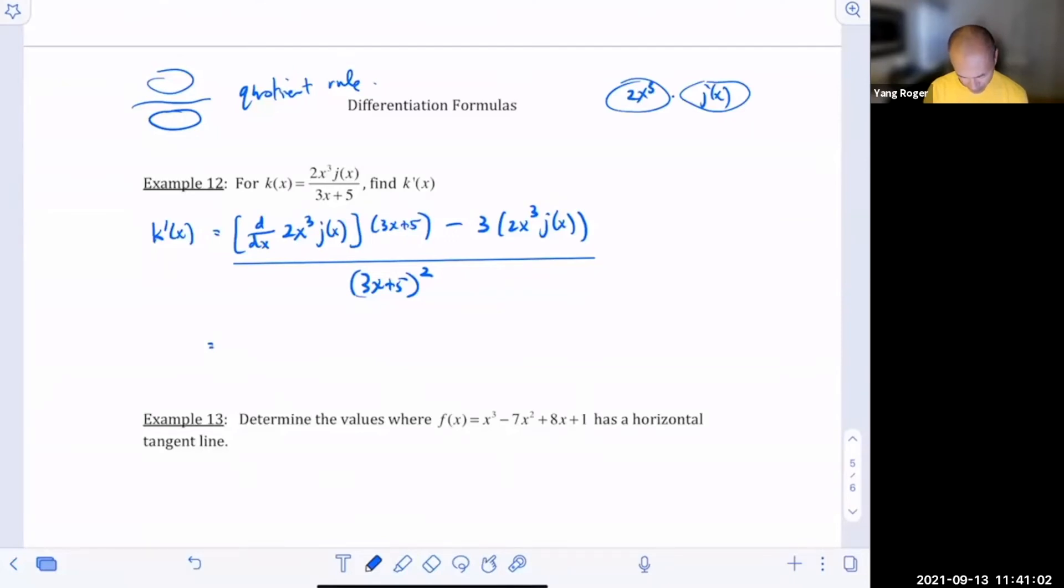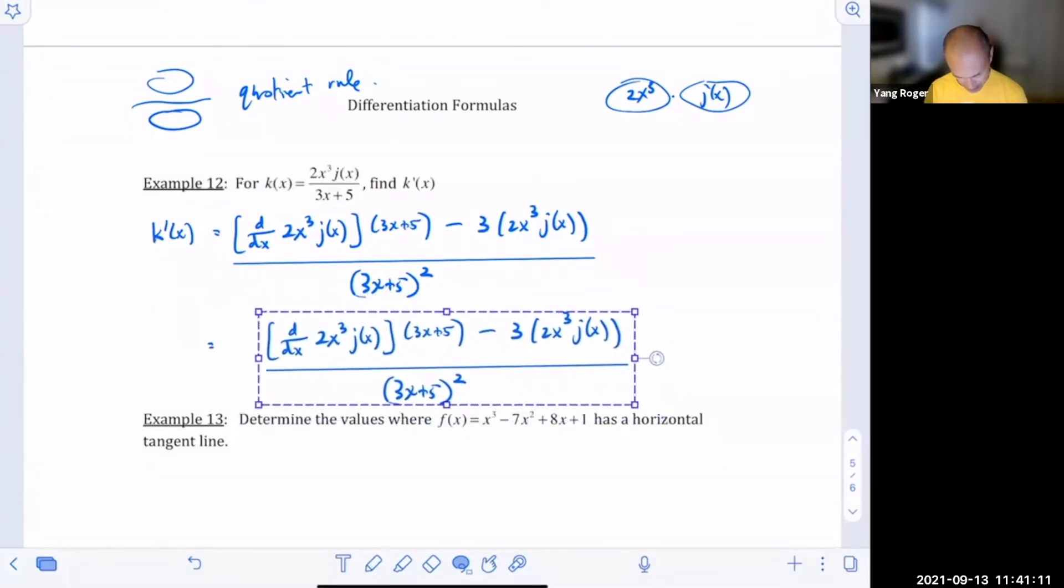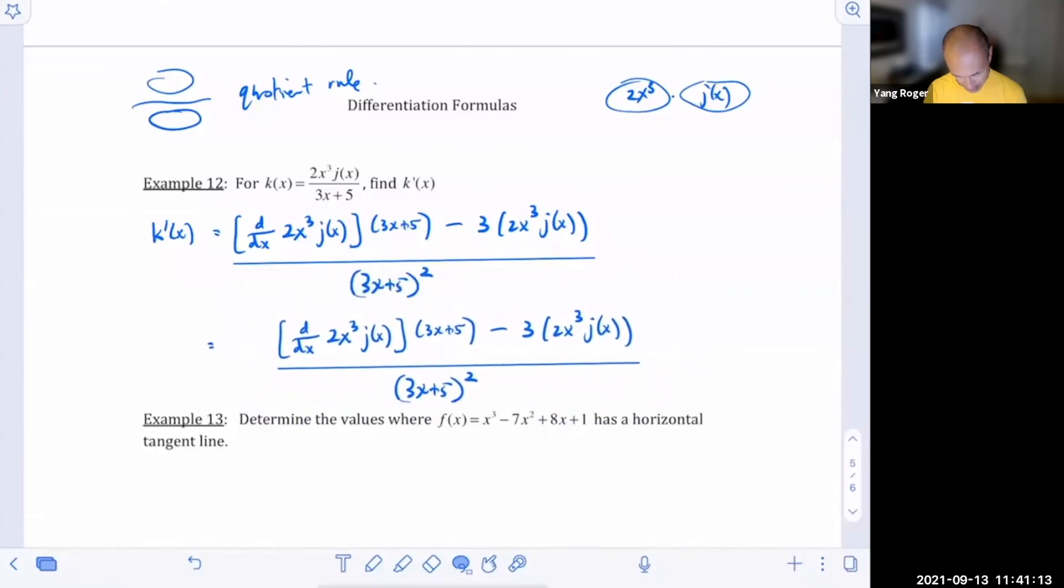So, we're going to use the product rule on this guy, so I'm going to do that jerk thing where I just kind of copy this. And then I'm just going to erase what's inside the square brackets and calculate that. So, we need the derivative of the first thing, the derivative of this 2x cubed, that derivative is going to be 6x squared, right?